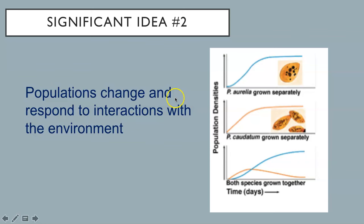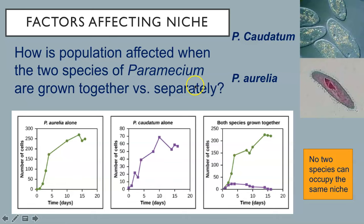Populations change and respond to interactions with the environment. Study these graphs. What happens to the population of Paramecium when they are incubated together? How is the population affected when the two species of Paramecium are grown together versus separately? Look at how each population grows separately and how the population of one species is affected when grown in the presence of the other. Since two species cannot share the same niche, one of them outcompetes the other, leaving no remaining niche for that species of Paramecium, and it becomes extinct.